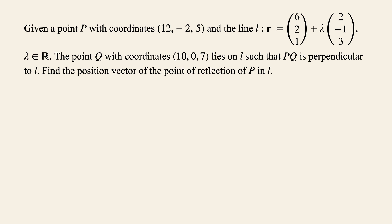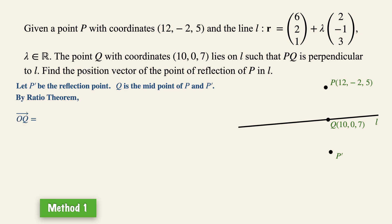Now I'm going to show you two methods to get to this. Let's start with method 1. Always begin by letting the reflection point be P'. Since Q is at the foot of the perpendicular of line L, it makes Q the midpoint of P and P'. We can then employ the ratio theorem to help us.